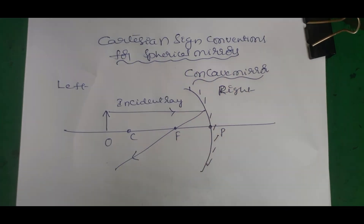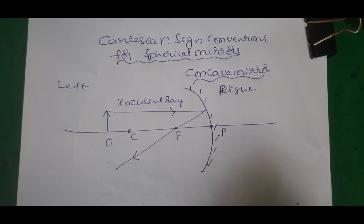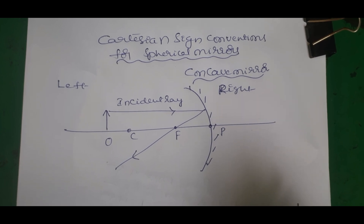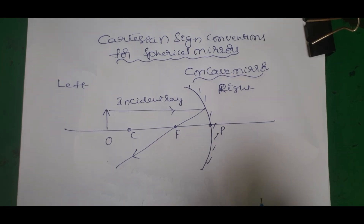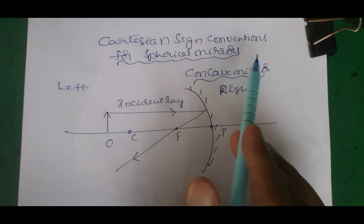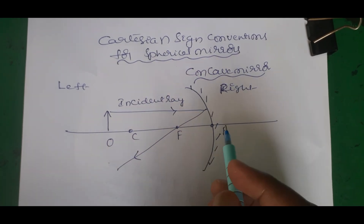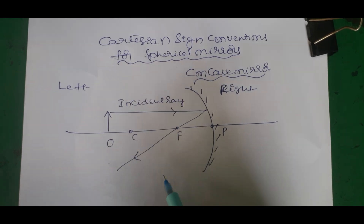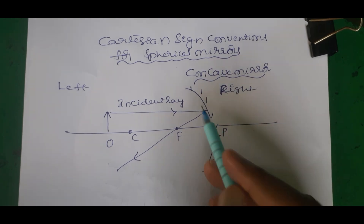Hi dear students, 10th class physics part 2024-25. We will discuss spherical mirrors - concave and convex mirrors. We will discuss Cartesian sign conventions. Sign conventions involve plus sign and minus sign - when do we use plus, when do we use minus? For object distance, image distance, radius, focal length, height of image, height of object.